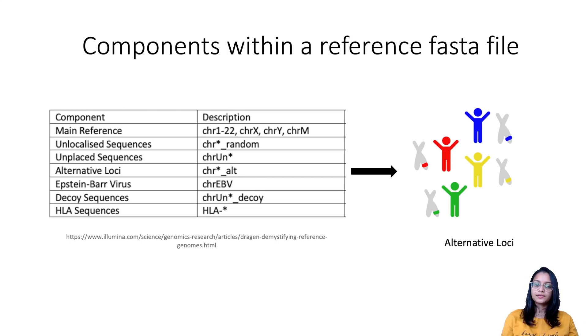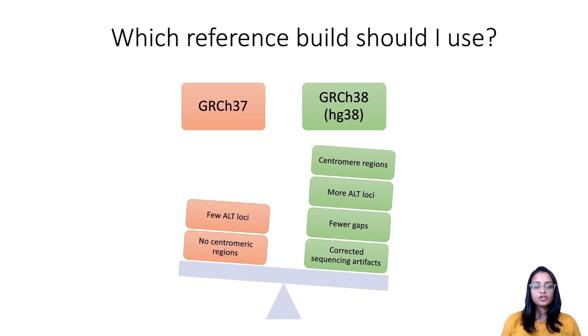Finally, when deciding which reference build should one use, it is strongly recommended to switch to GRCh38 or hg38, as there are significant improvements in this version compared to the previous version. Some of the significant improvements include addition of many alternative loci, correction of thousands of small sequencing artifacts which can cause false SNPs and indels to be called, inclusion of centromeric regions, and updates to non-nuclear genomic sequence. Overall, there have been major updates with the latest version and it's strongly recommended to switch to the GRCh38.